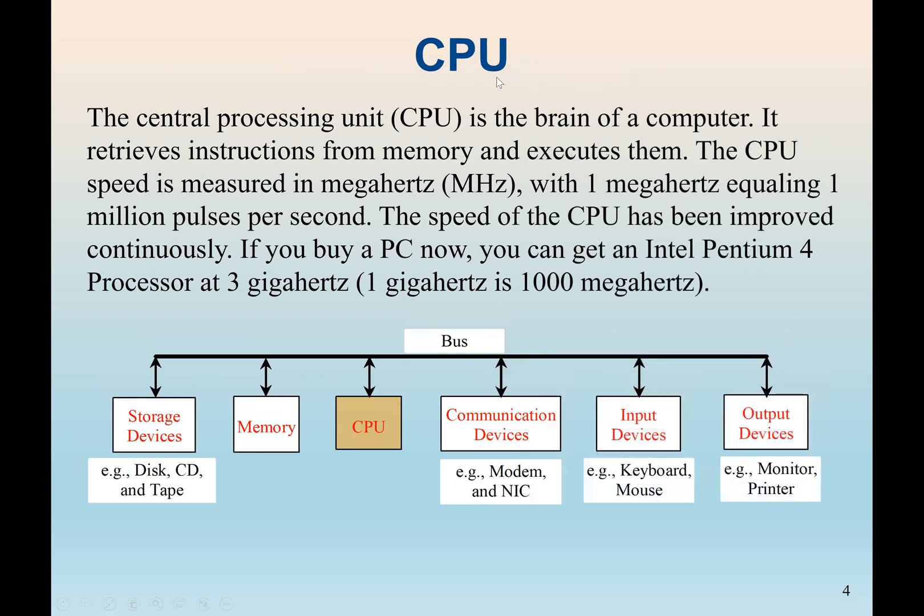So here we see the central processing unit, which is the CPU, is the brain of a computer. And it normally retrieves information from memory. So the CPU only has access to the memory. It doesn't have access to the permanent storage device, such as the hard drive. Then when you get the data from memory, then again, you can execute it.